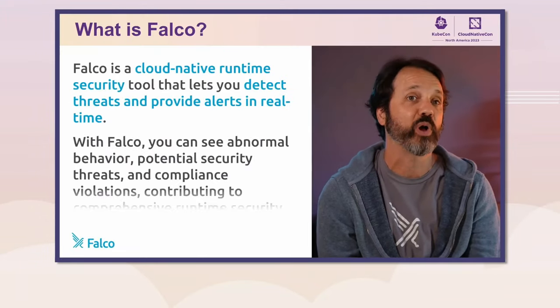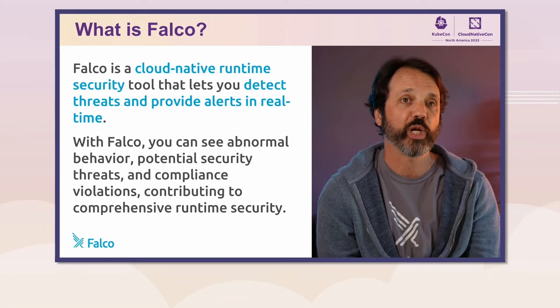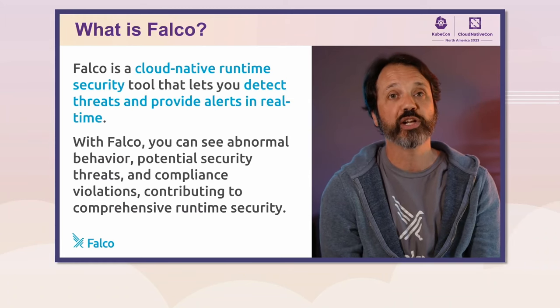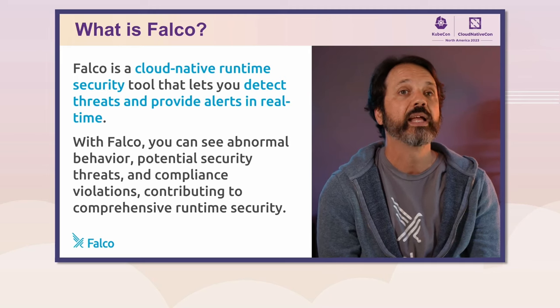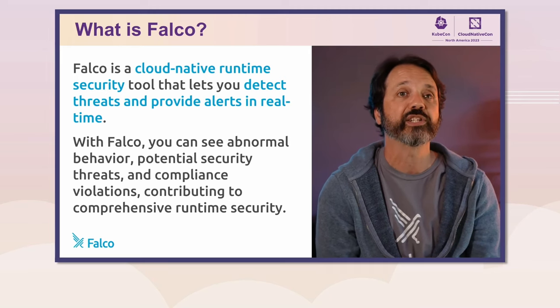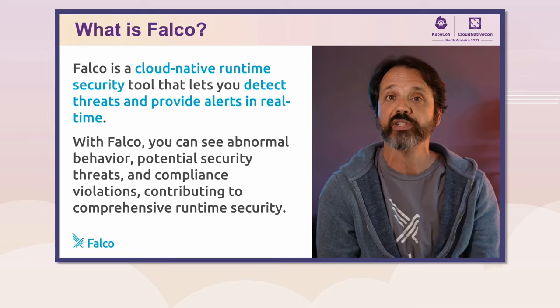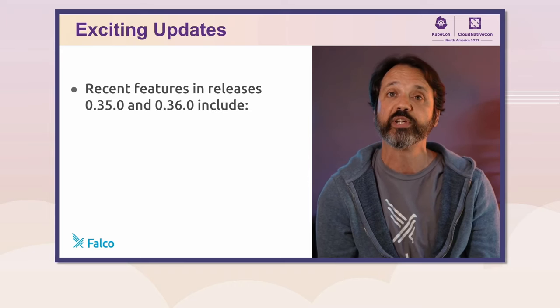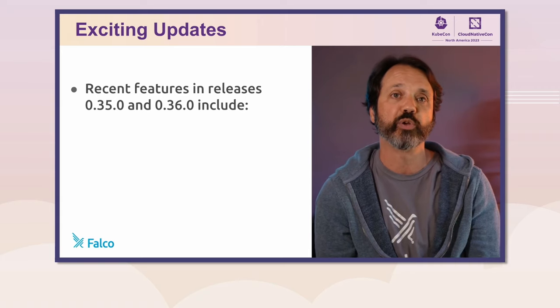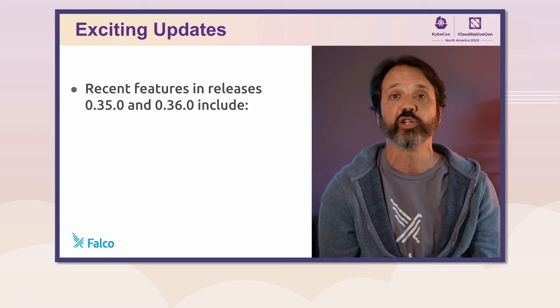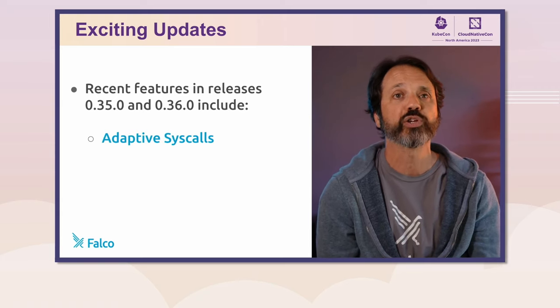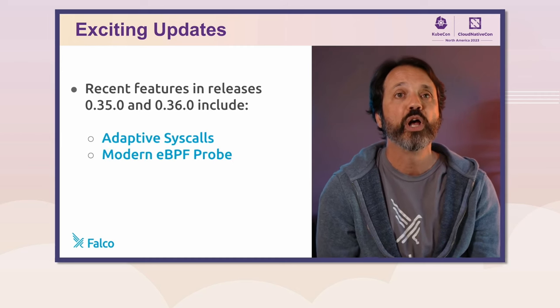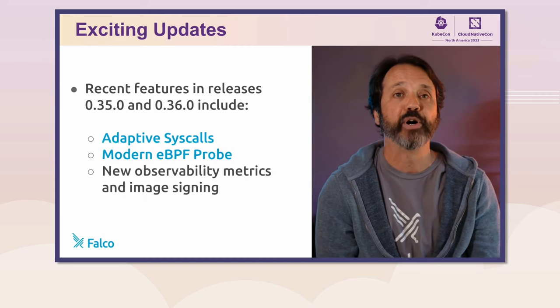Hi, I'm Mike Coleman, a developer advocate working on Falco, a CNCF incubating project focused on runtime security. I'm pleased to be here at KubeCon in Chicago to share a quick update. Community feedback is a big part of open source projects, and our two recent releases, 0.35 and 0.36, really deliver on community input with a bunch of great new features, including adaptive syscalls, our modern eBPF probe, new observability metrics, and more.